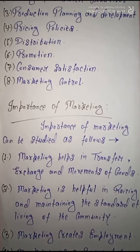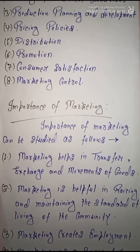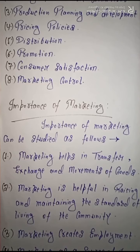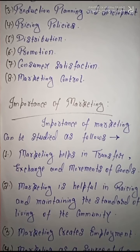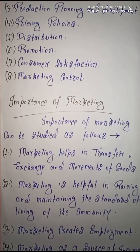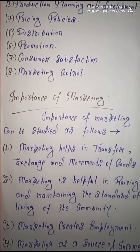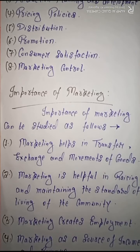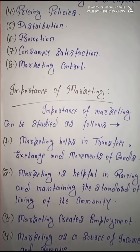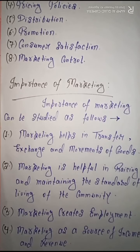Once goods are produced, the transfer, exchange, and movement of goods becomes necessary — from the place of production to the place of consumption. When goods are not transferred, exchanged, or moved, they are not properly utilized. Marketing uses different types of tools to ensure the availability of products and to move, exchange, and transfer them from the place of production to the place of consumption. This is why marketing is very important.